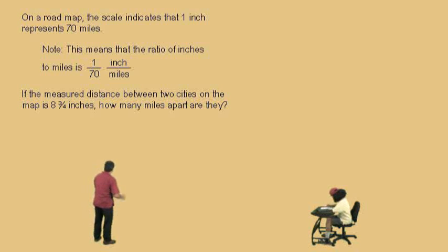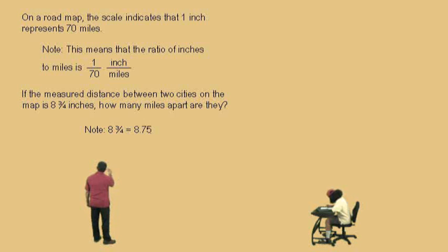Well, the first thing we're going to do is we're going to change our fraction into a decimal. Remember, 8 and 3 fourths is a mixed number, and 3 divided by 4 is what, Charlie? 0.75. 0.75, so our mixed number in decimal form is 8.75. That's 8 and 3 fourths inches, right?